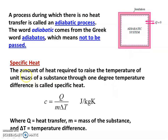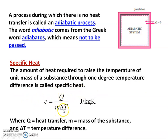Next, specific heat. The formula is: C equals capital Q divided by M into delta T. The amount of heat required to raise the temperature of unit mass of a substance through one degree temperature difference is called specific heat. Specific heat small c equals amount of heat transfer Q per unit mass per unit temperature difference, with units joules per kilogram Kelvin. Q is heat transfer, M is mass, and delta T is temperature difference.